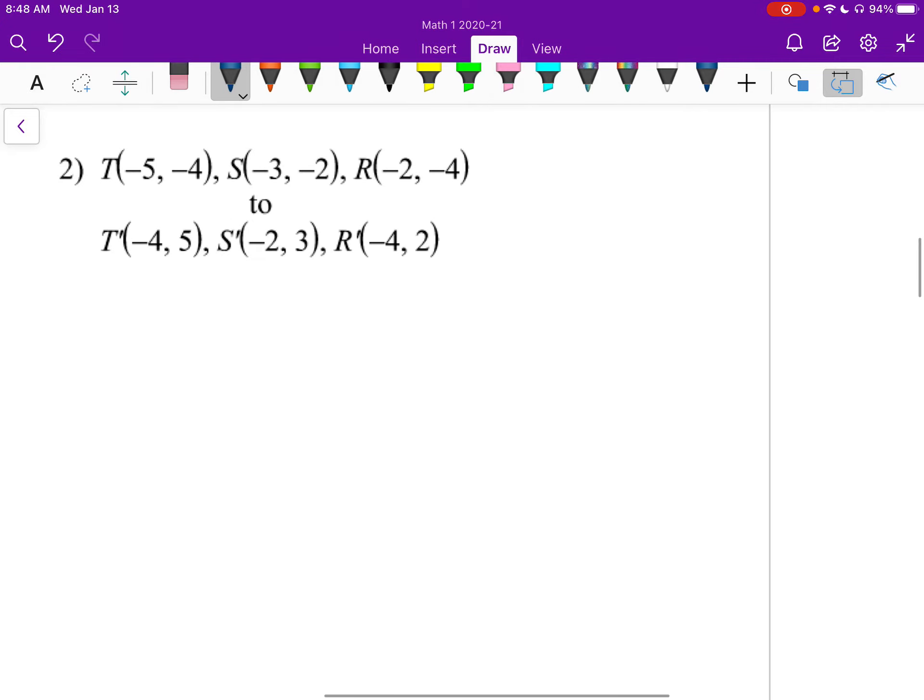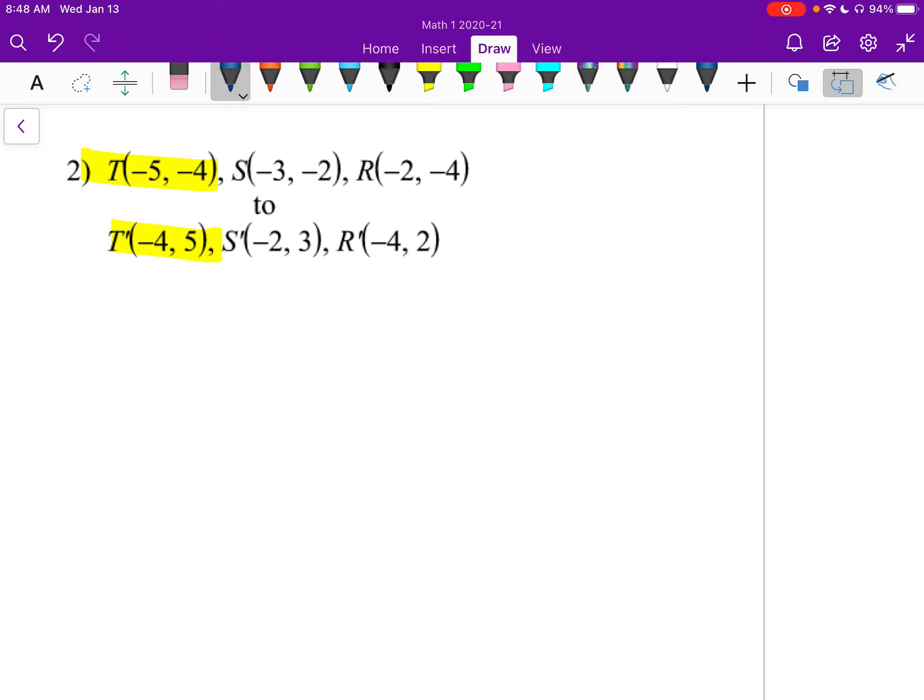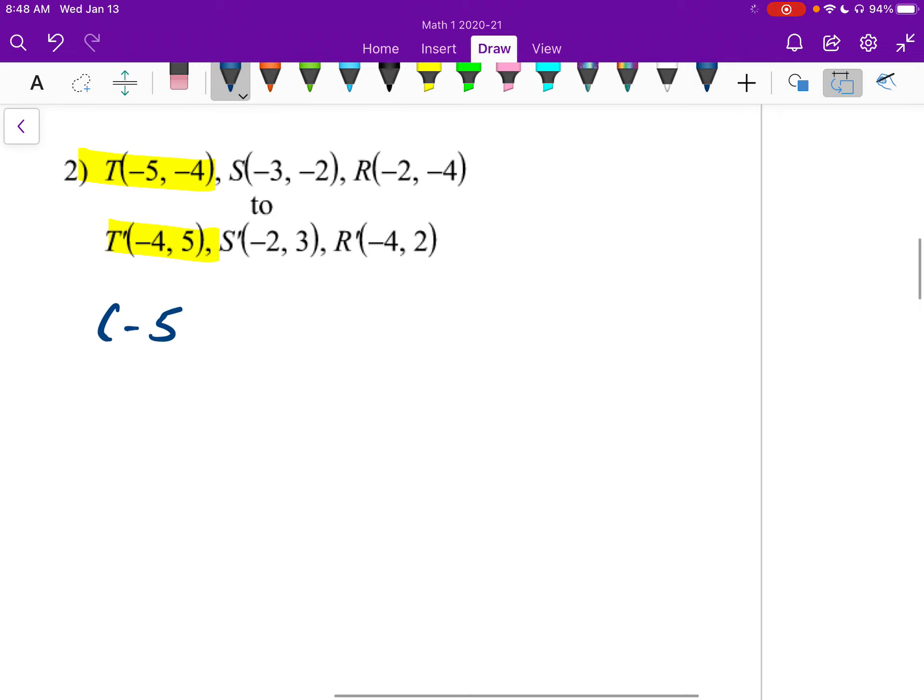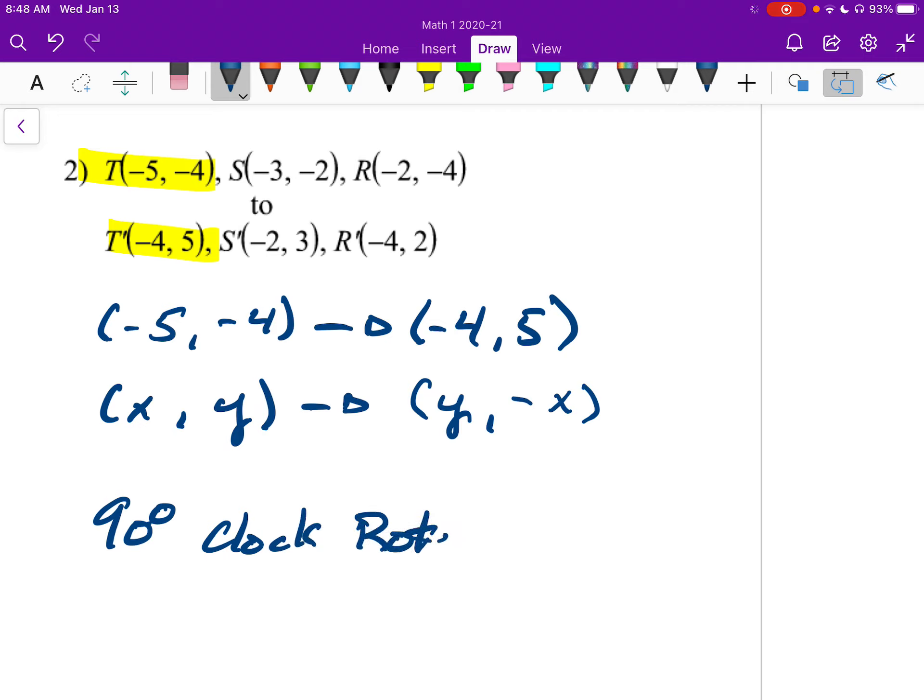Number 2, we're looking at t and t prime. So t is at negative 5, negative 4, and it goes to negative 4, 5. So if this is x and y, the negative 4 is in the second spot, the y spot, and it ends up going to the front. So it will be y in the front. And then x is negative 5. It goes to the second spot, and it becomes positive. So it will be negative x. So this one is actually going to be just like the last one. It is a 90-degree clock rotation.